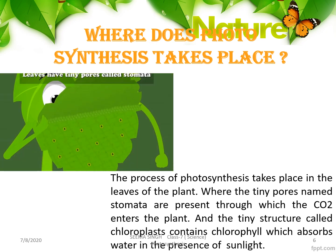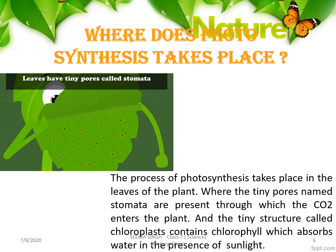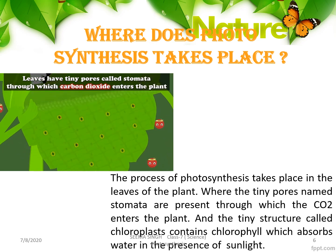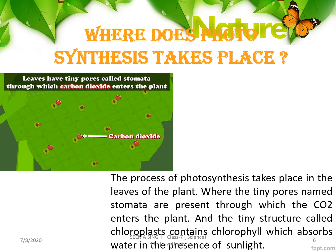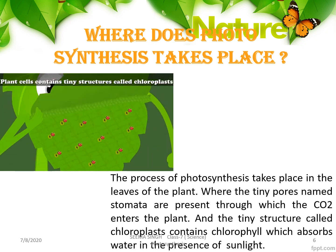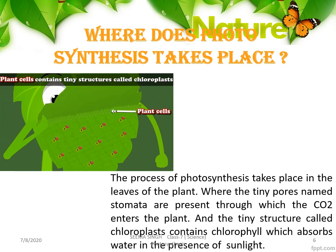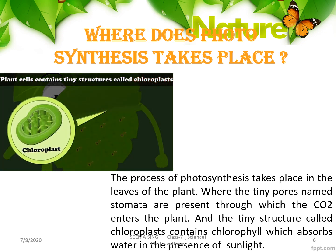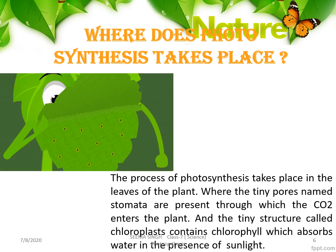So photosynthesis takes place on the leaves, where carbon dioxide is taken in through the tiny structures called stomata. The plant cells have chloroplasts which contain chlorophyll, the green pigmentation. This chlorophyll absorbs water in the presence of sunlight. This is the entire process of photosynthesis — how it takes place and where it takes place.